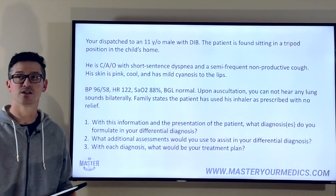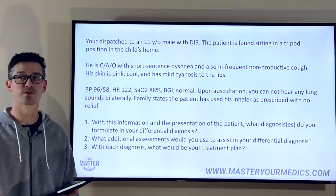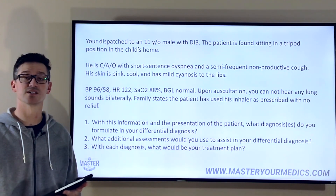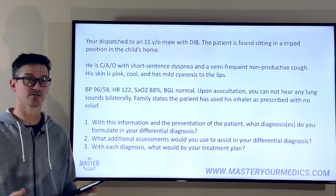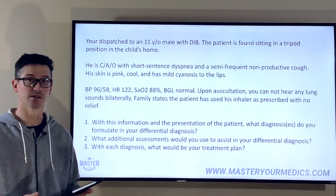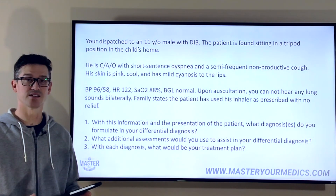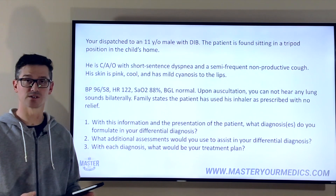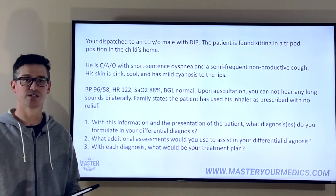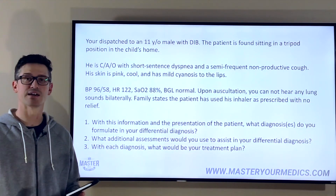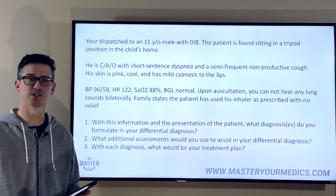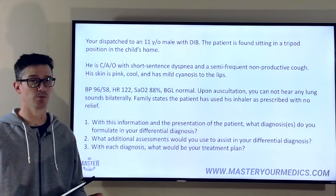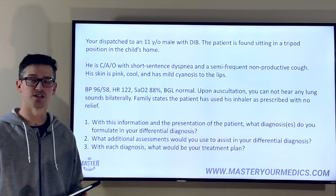You're dispatched to an 11-year-old with difficulty breathing. The patient is found sitting on the edge of the couch in a tripod position, having very short-sentence dyspnea. The patient also has a semi-frequent, non-productive, very dry cough. Their skin is pink, warm, and dry, with some mild cyanosis to the lips.